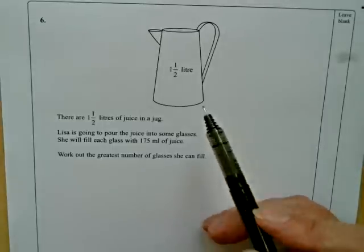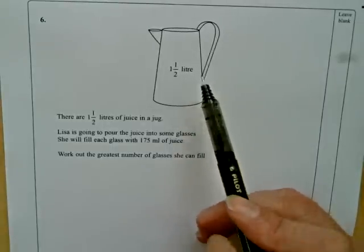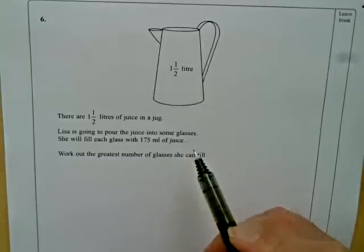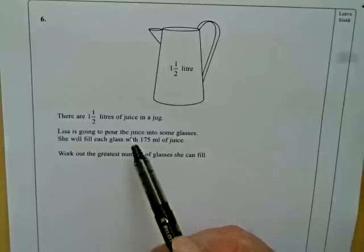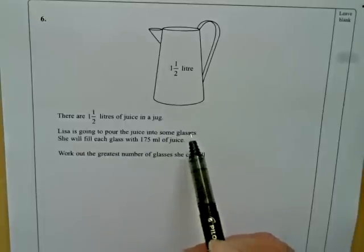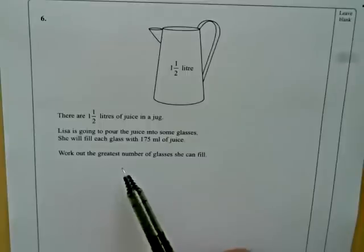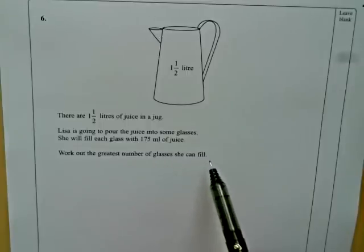A four mark question here, and we're looking at a one and a half litre jug being filled with a hundred and seventy-five millilitres of juice, and we're going to pour the juice into some glasses. She fills each glass with a hundred and seventy-five mils of juice. Work out the greatest number of glasses she can fill.